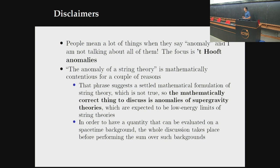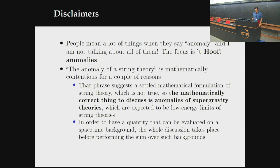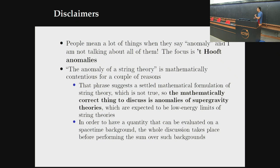When I say 'anomaly of string theory,' I mean we're looking mathematically precisely at the supergravity low energy limit, where you can really say this. Anomalies are things we evaluate on a spacetime manifold, and evaluating supergravity on a spacetime manifold — before you do the sum over various backgrounds — that's the setting I'm working in. With these disclaimers, things should be sound, but if anything seems off, please let me know.